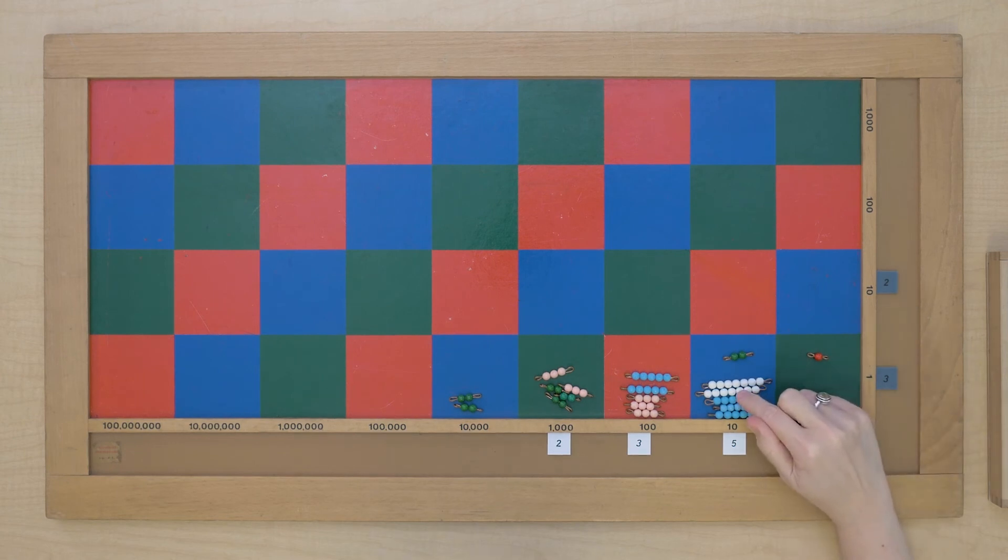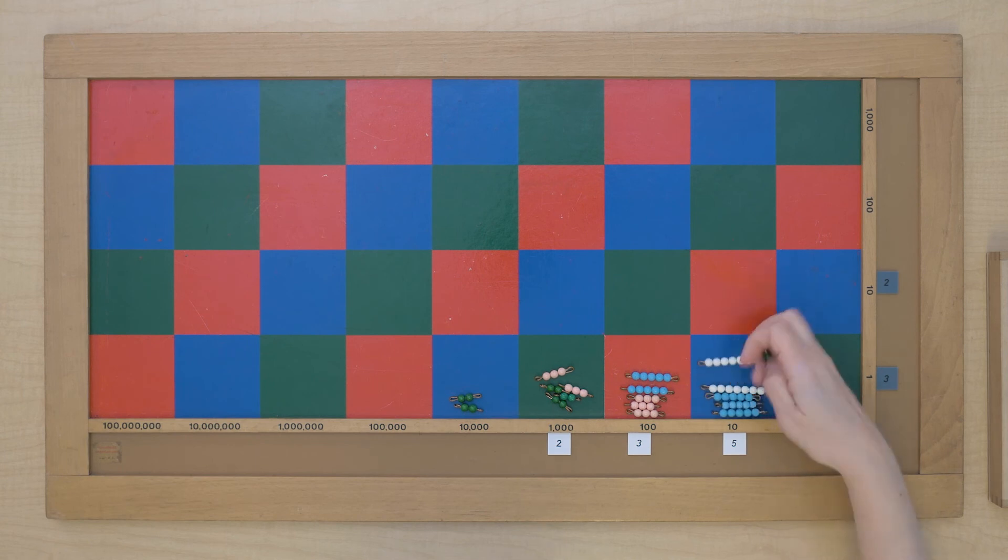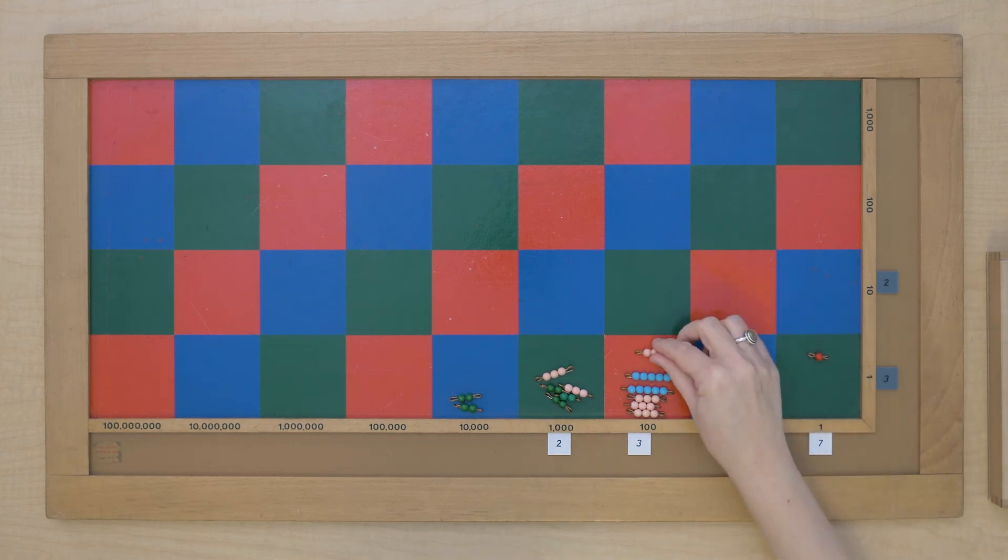Here we've got 14, 24, 29, 31. So I'm going to exchange this. We've got 31 tens. So I've got one ten and three hundreds, 31 tens.